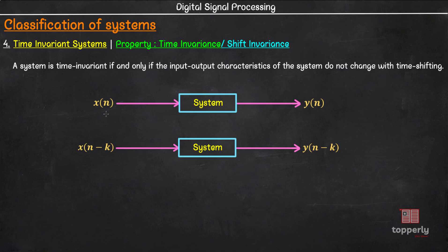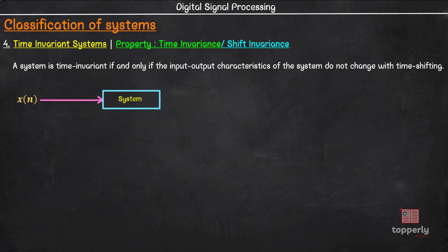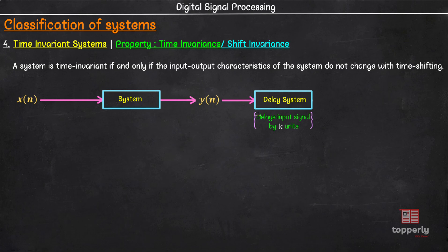Next, we will see how to check if a system is time invariant or not. Step 1 is to provide a generic input x(n) to the system under study. The corresponding output of the system will be y(n). We will then feed this output y(n) to a delay system which will delay it by some k units. Therefore, the output of the delay system is y(n − k). That is the first step in determining whether a system is time invariant or not.